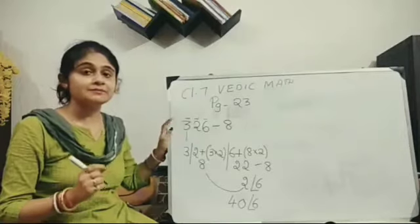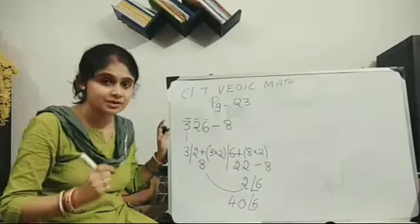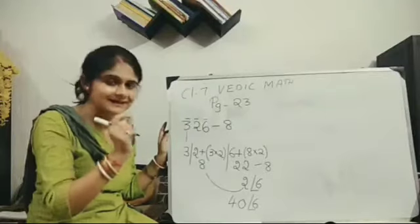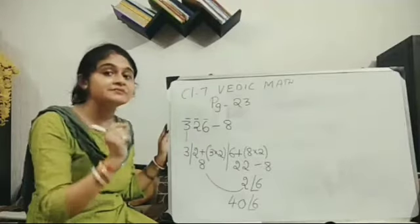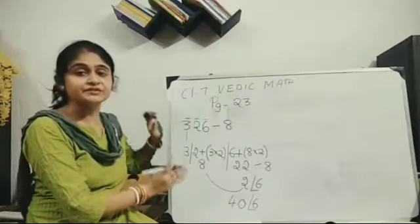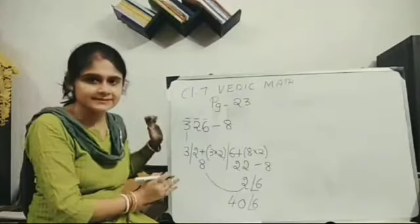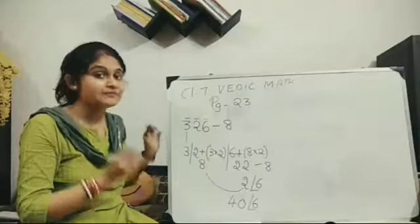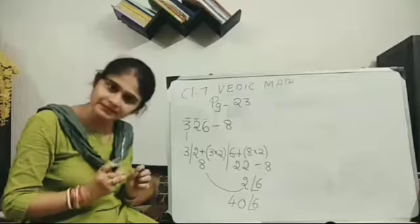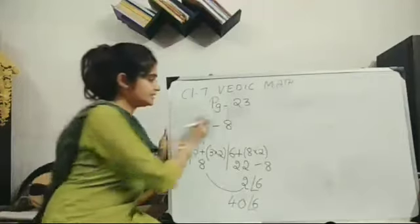So we are not using decimal. So exact remainder we may not get sometimes. Clear? This pattern, division of any number by 8 is done with the help of remainder. Normal division as we do. Clear? Let's move to the next question.